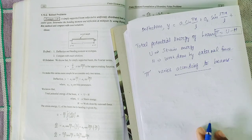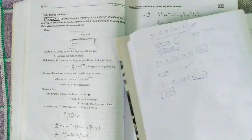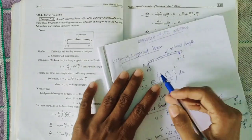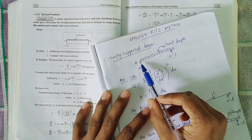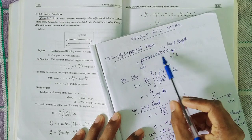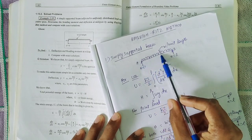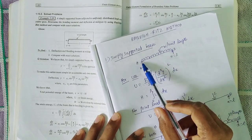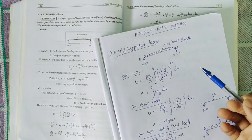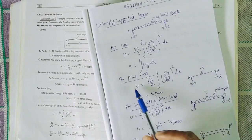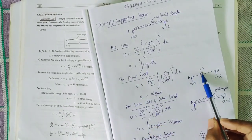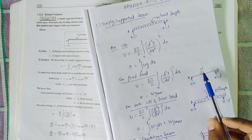If you look at the simply supported beam, the load is active. For a simply supported beam, this is UDL — uniformly distributed load. How about the point load? You can use a point load — the point load at the center of the beam.